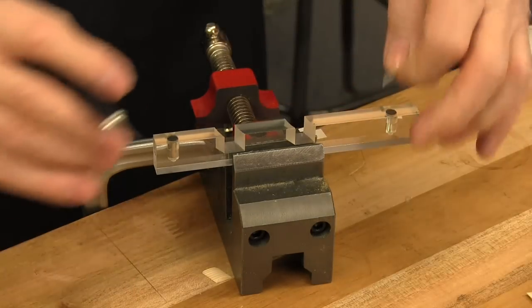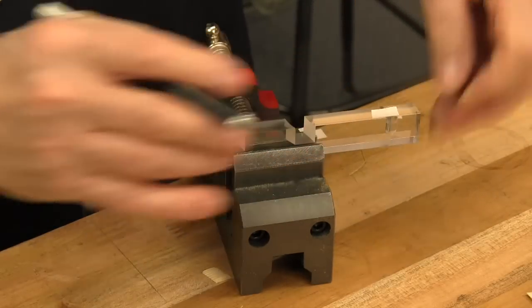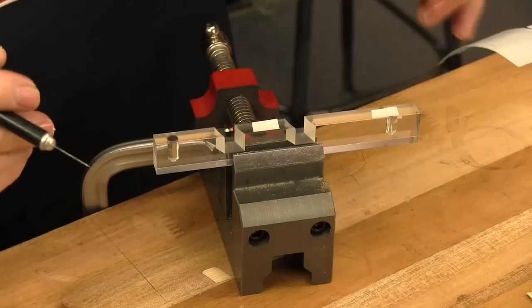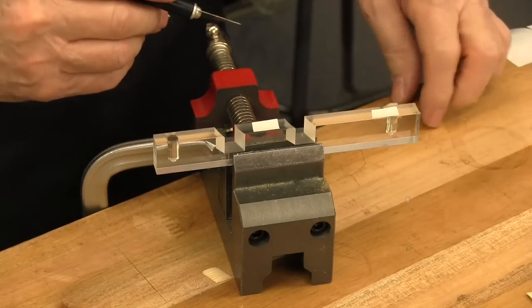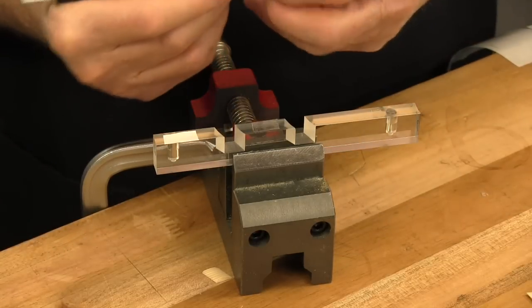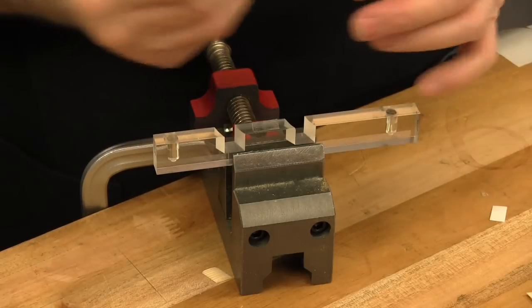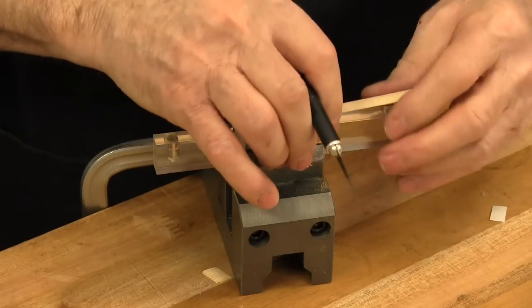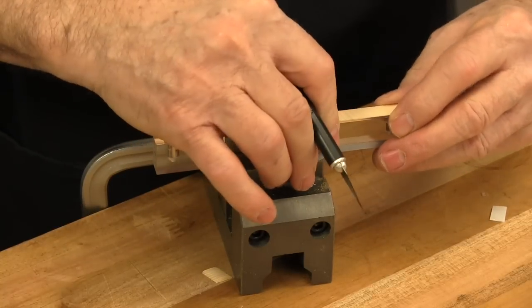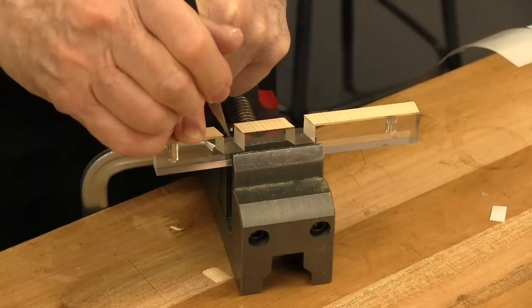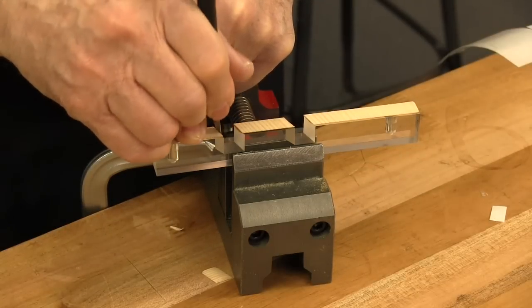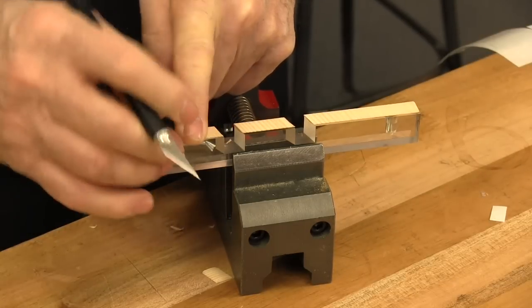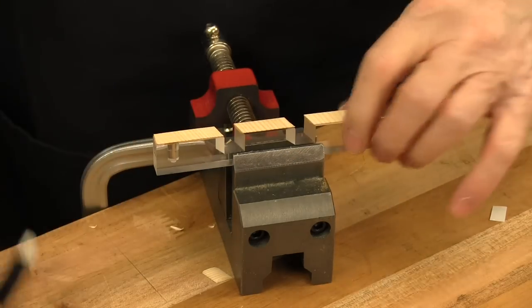Then you put some double stick tape up on the cartridge to hold those pieces in place. You don't need a lot. And that's ready for glue and to go inside.